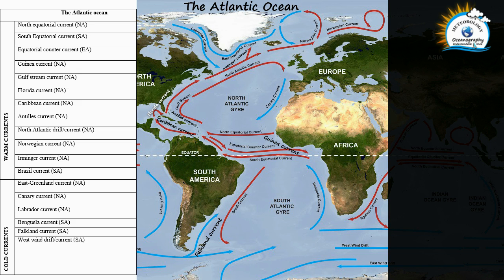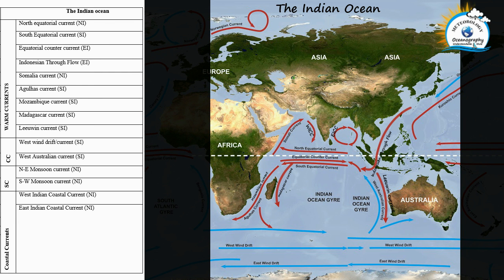For cold currents in the Atlantic, the East Greenland current flows along Greenland. Nearby is the Labrador current, which is also cold. The Benguela current is a cold current in the South Atlantic flowing toward the equator. The Falkland current is in the South Atlantic, starting from the southern tip of South America. And again, as discussed for the Pacific, the West Wind Drift is present here too — it has very high transport compared to other currents.